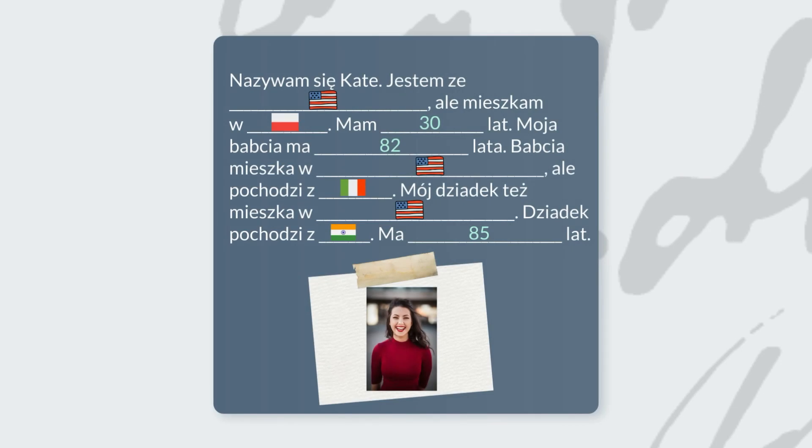In a moment I will ask you to read a text aloud. But before we start, some new words: ale — ale means 'but'; też — też means 'too'. Okay, now here's the text. Pause the video and try to read it aloud, substituting the flags with the name of the country and reading the numbers aloud. Ready? Pause.